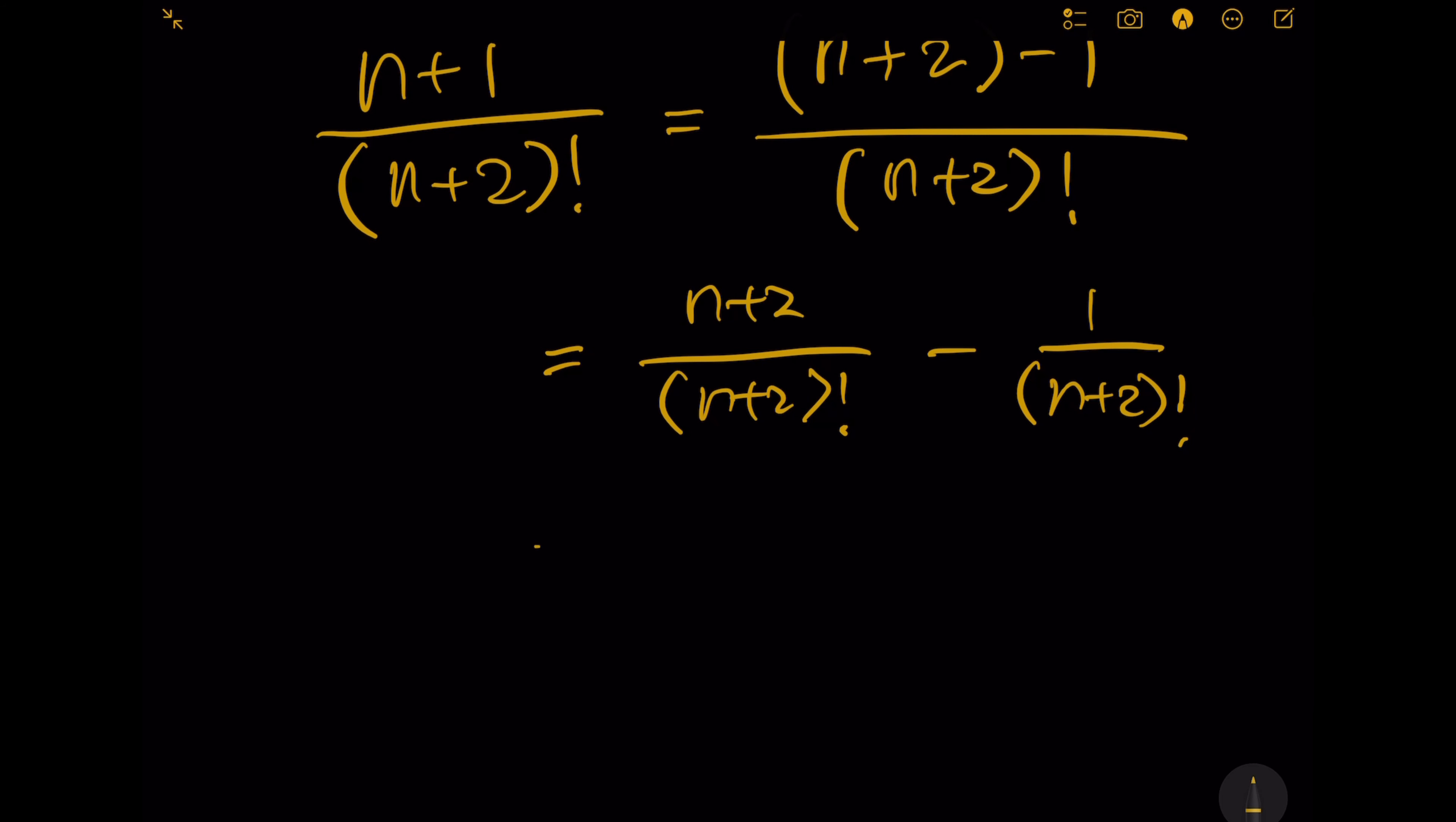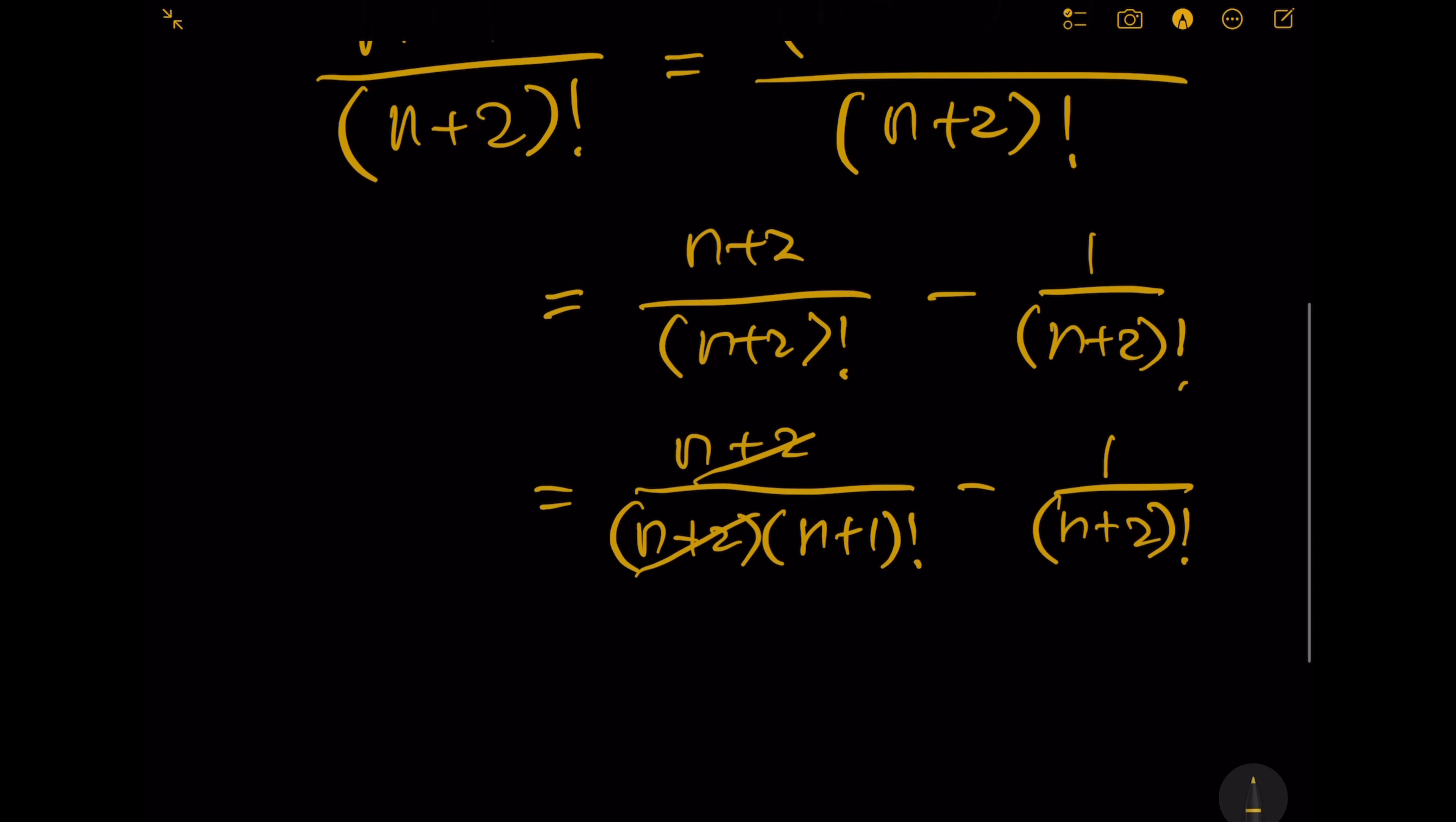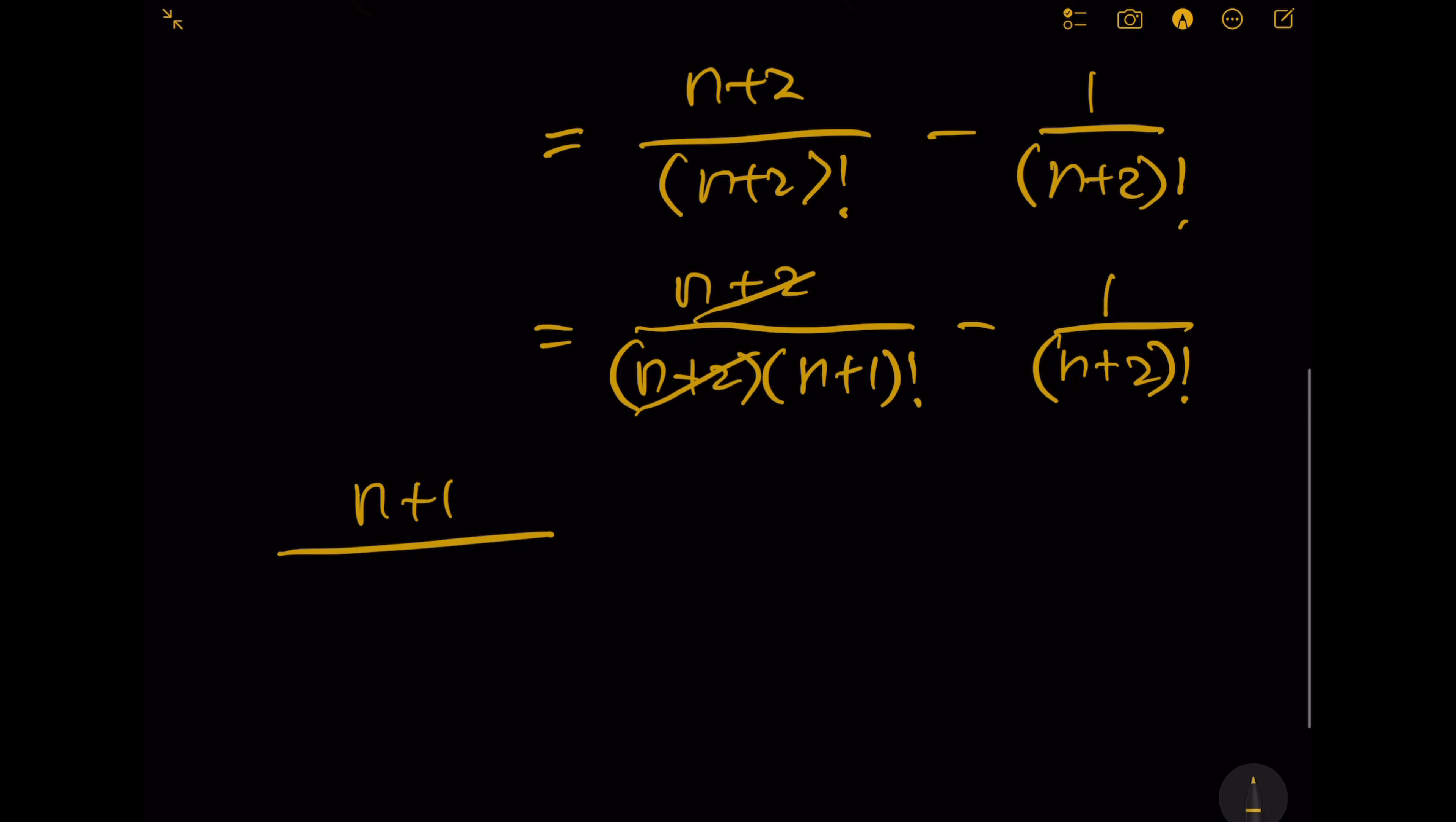The first term can be further transformed where the n plus 2 and n plus 2 can cancel each other. Therefore, we know n plus 1 over n plus 2 factorial is simply equal to 1 over n plus 1 factorial minus 1 over n plus 2 factorial.